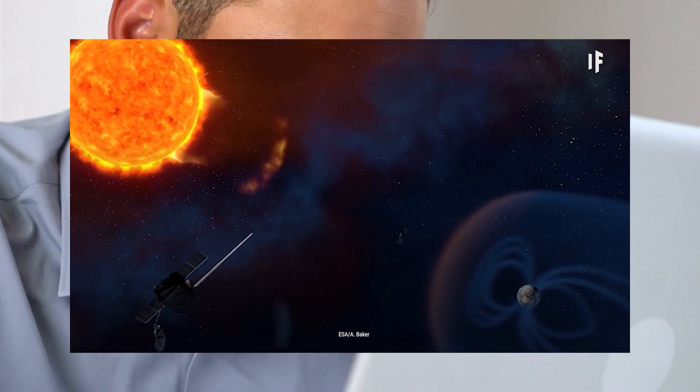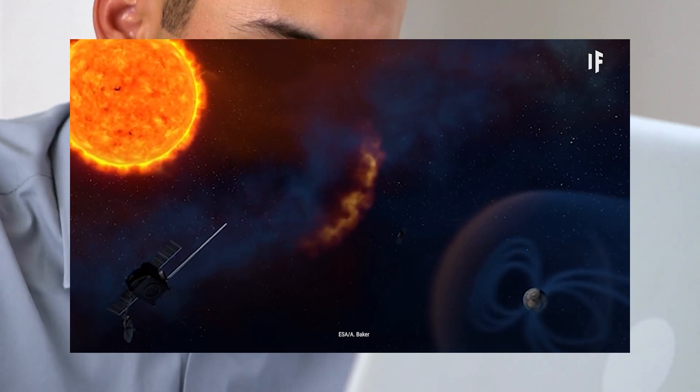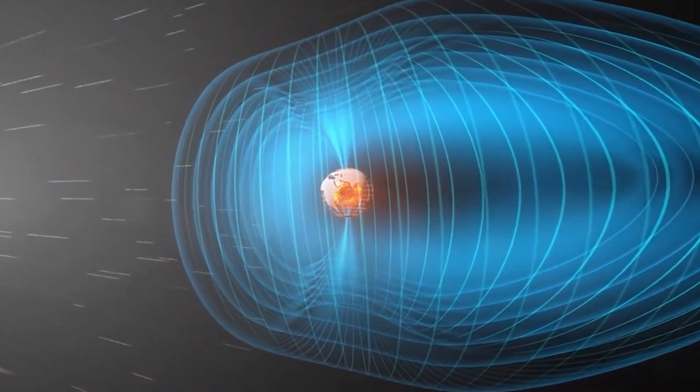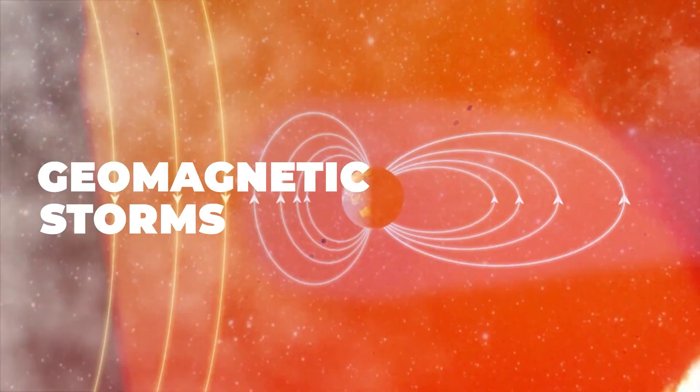Are all CMEs a threat to Earth? The sun produces on average about three solar storms daily. Fortunately, many of these eruptions don't even reach the sun's orbit or approach its atmosphere. Our primary concern is with the CMEs that align with Earth's orbit and pose a potential impact.